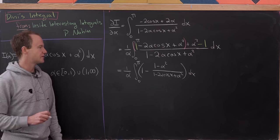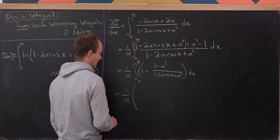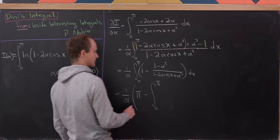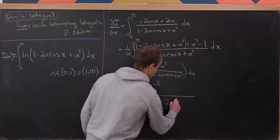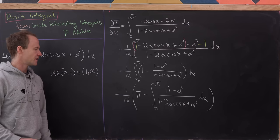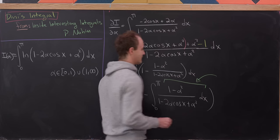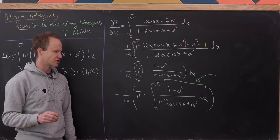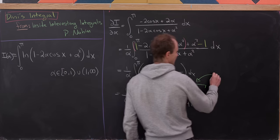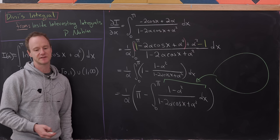So we integrate out the constant 1 to get pi, giving: 1 over alpha times the quantity pi minus the integral from 0 to pi of (1 minus alpha squared) over (1 minus 2 alpha cosine x plus alpha squared) dx. The remaining integral is a rational function involving cosine, and there's a classic trick called the Weierstrass substitution, or half-angle tangent substitution, which allows for a great deal of simplification.